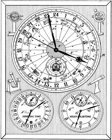More exactly, sidereal time is the angle, measured along the celestial equator, from the observer's meridian to the great circle that passes through the March equinox and both celestial poles, and is usually expressed in hours, minutes, and seconds.